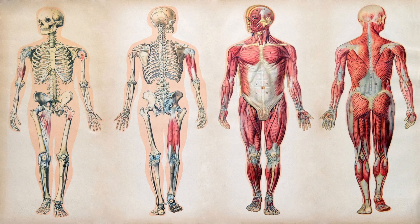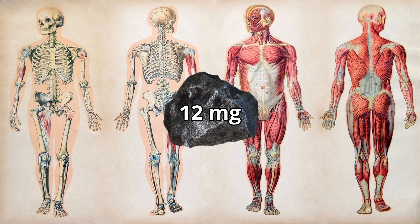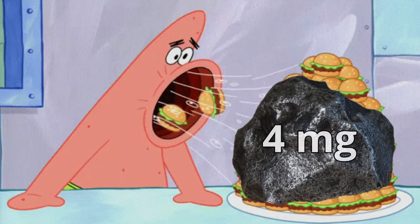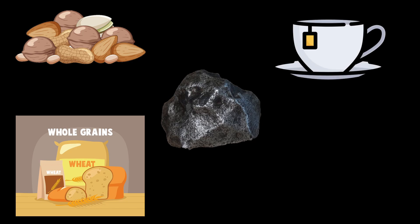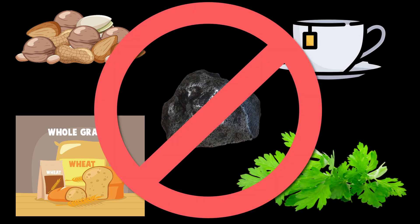The average human body contains about 12 milligrams of manganese and we take in about 4 milligrams each day from foods such as nuts, whole grain cereals, tea, and parsley. Without it, bones grow spongier and break more easily.